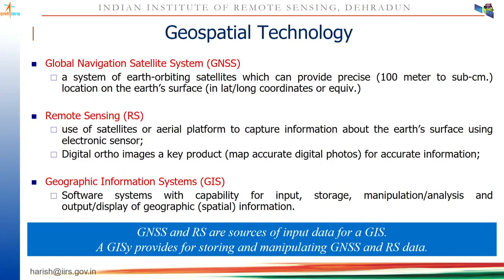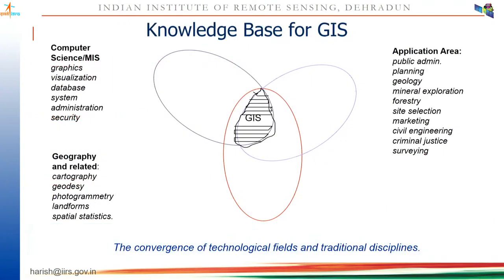The second technology is Remote Sensing — a sensor-based observation of the earth's surface where sensors can be deployed on satellites, aircraft, or drones. It acquires information about objects without physical contact. The third is GIS itself — the integration of hardware, software, data analytics, and data presentation techniques to handle geographical data. When we combine all three — GNSS, Remote Sensing, and GIS — it is known as Geospatial Technology.